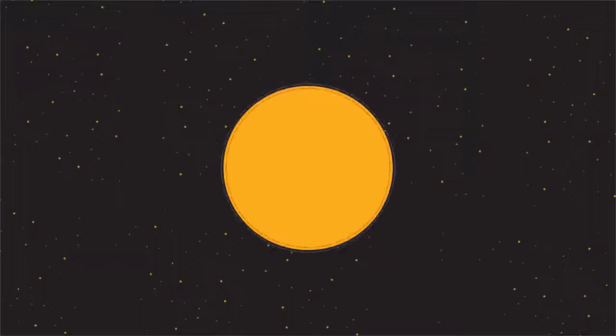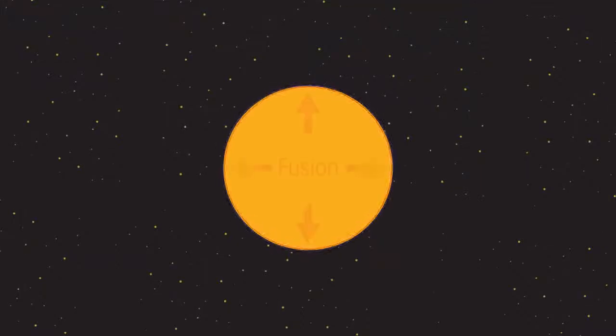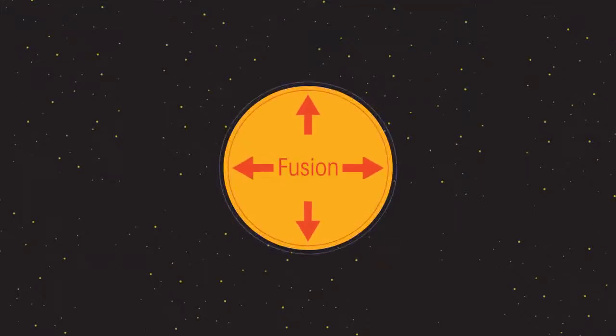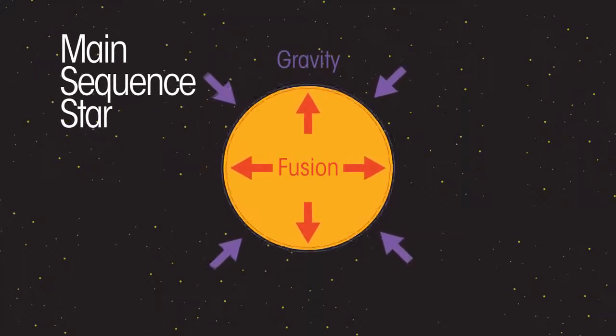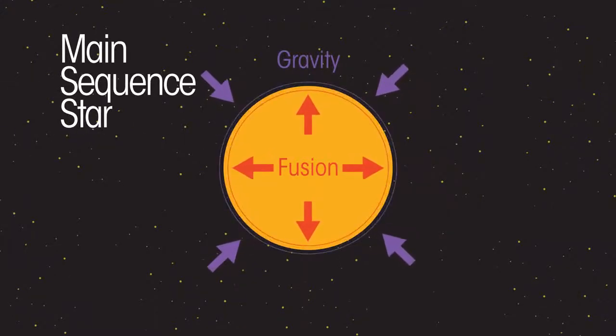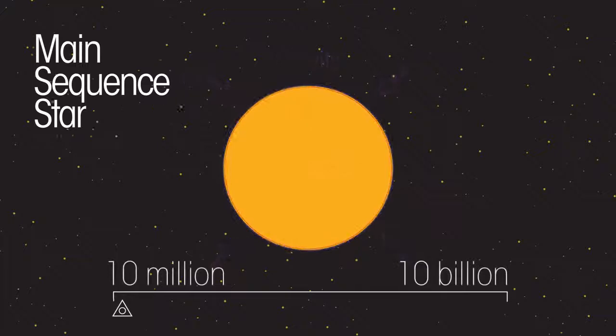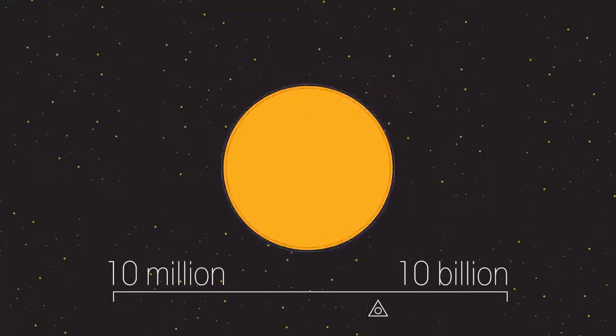The star then enters a long stable period where the outward pressure of the heat generated by nuclear fusion counteracts the force of gravity. The star is now called a main sequence star and it stays in this state for between 10 million and 10 billion years.